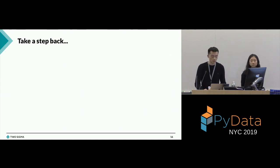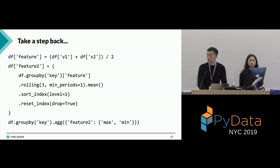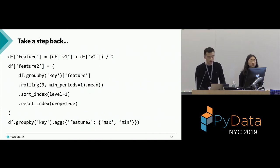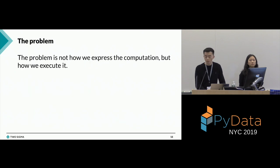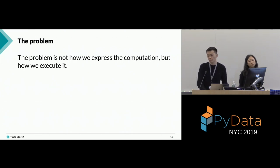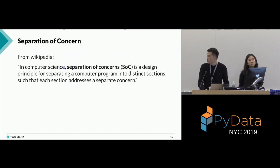So what can we do? None of these seems very easy to pick — all of them have problems. I want to take a step back and look at what we actually want to achieve here. If we look at the code, we're actually pretty happy about the way we express it. We kind of just want to have the same code working with a larger data set and run faster. The problem is not how we express the computation — we're actually pretty happy about the code. But we're not happy about how the code is executed.